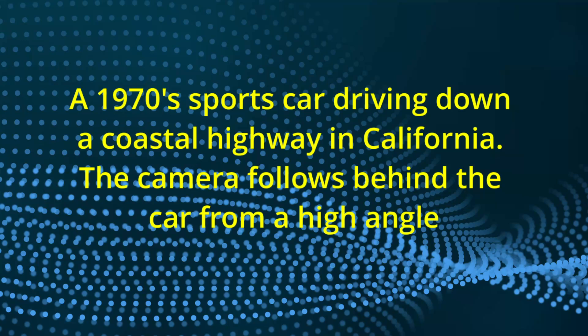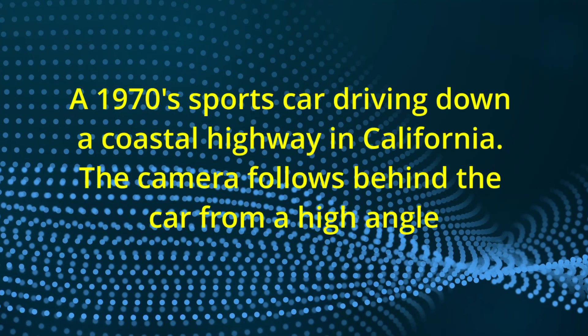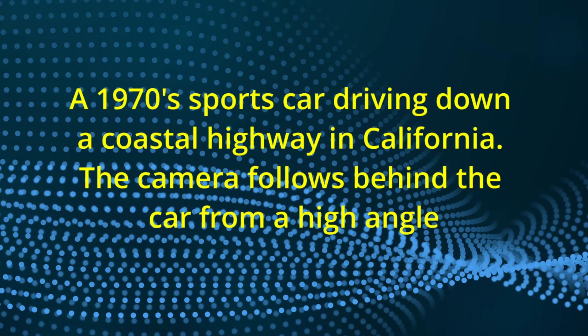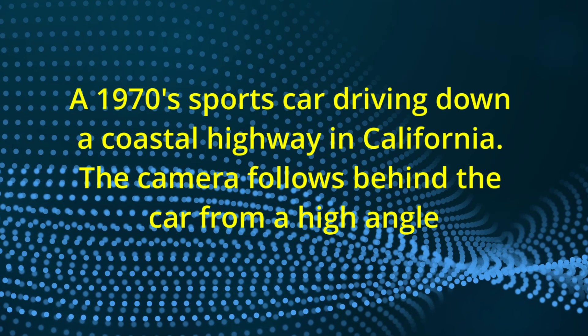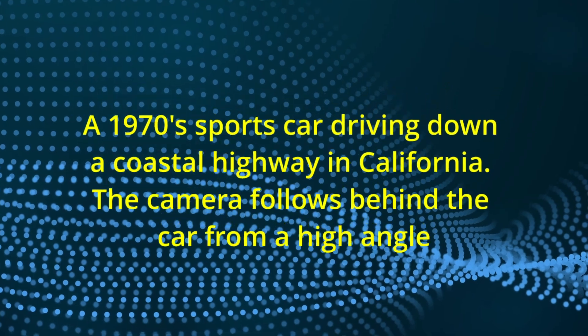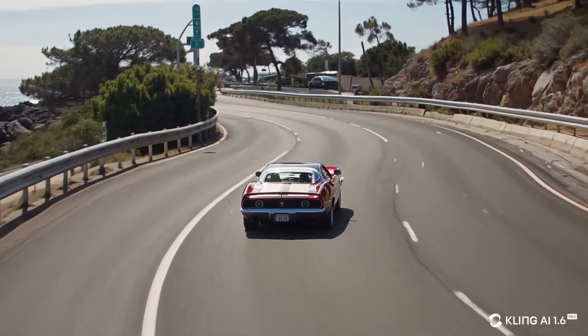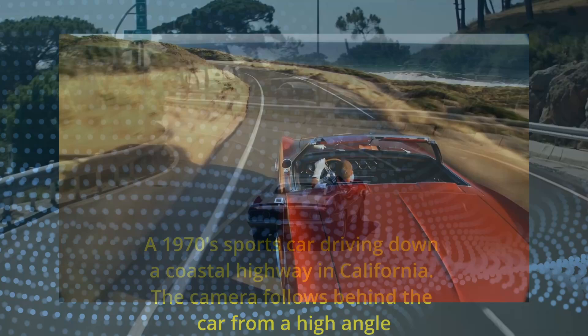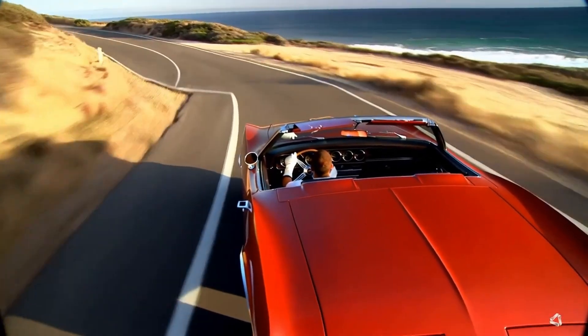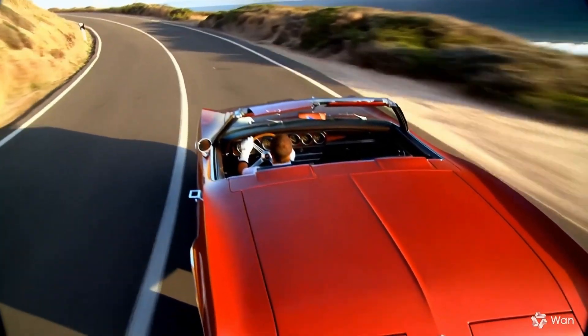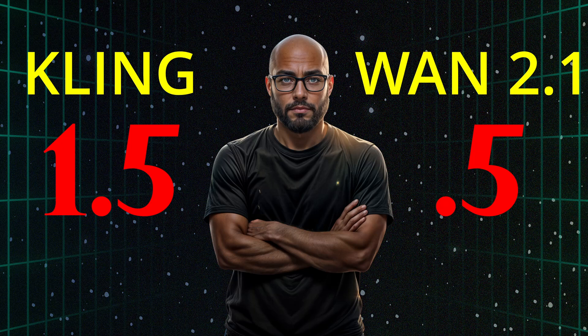Next up: a 1970s sports car driving down a coastal highway in California — the camera follows behind the car from a high angle. I highlighted the camera angle in this prompt to test that facet of prompt adherence. Great generation from Kling, and same with WAN. Both generators handled the specifics of the camera angle, the car, and the scenery very well here. We'll call this one a tie, as both are usable and close in quality.